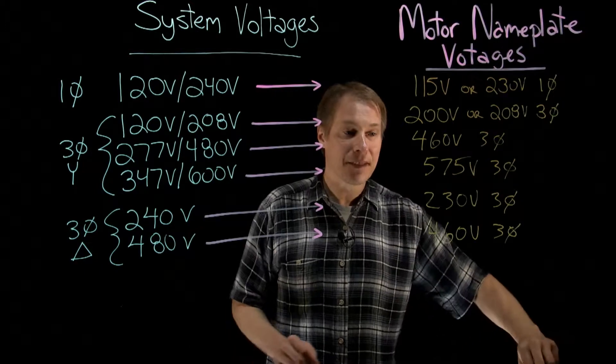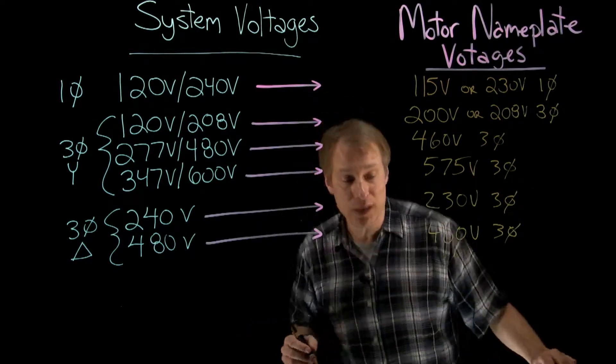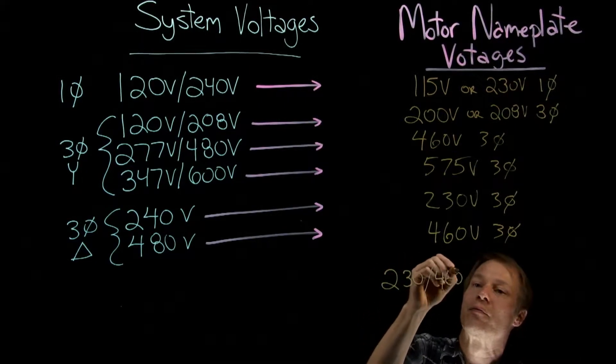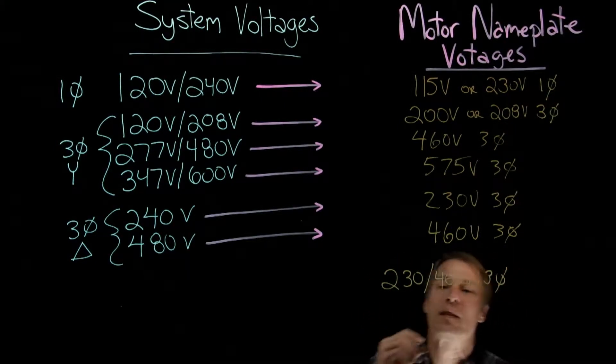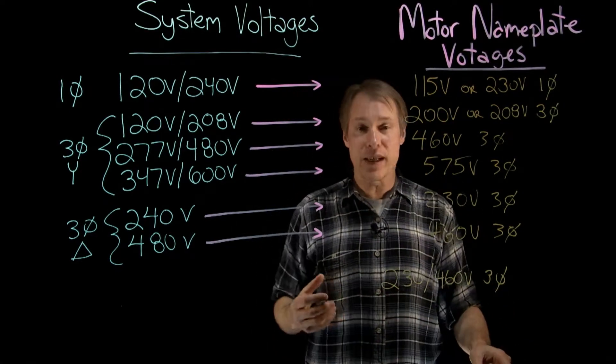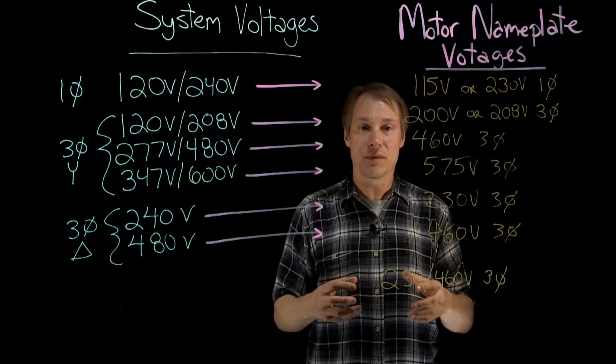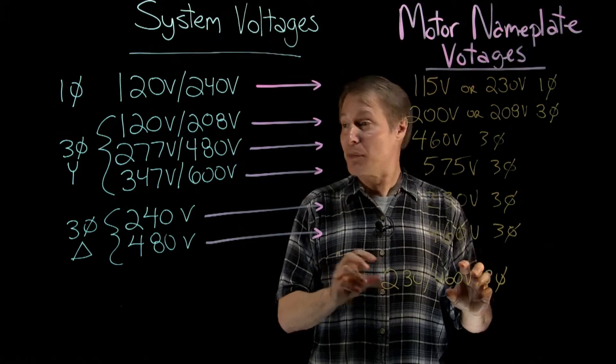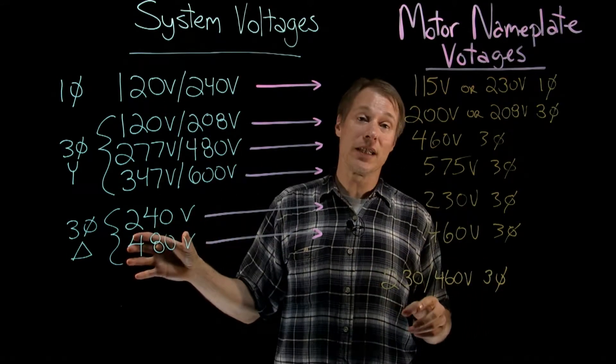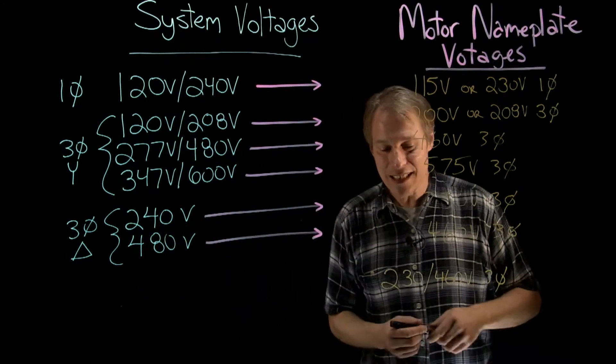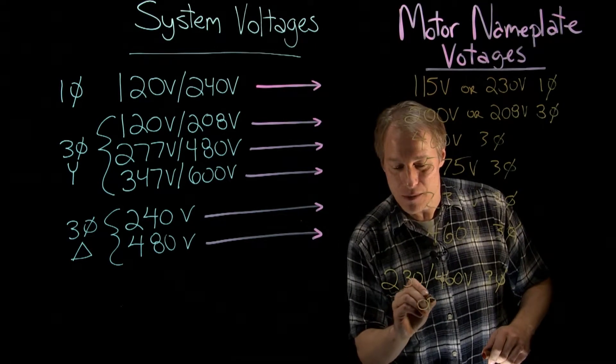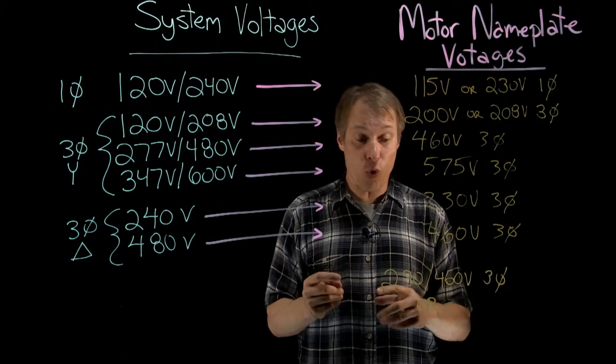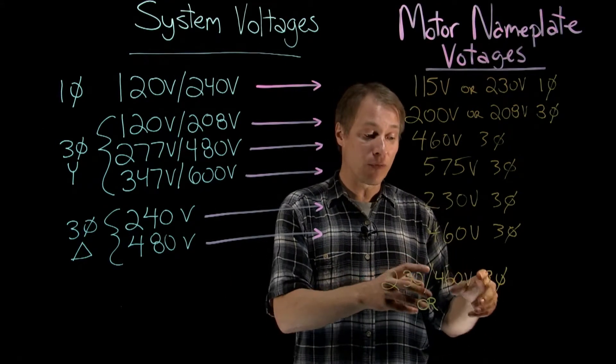The only other thing to add is some motors are dual voltage. So for example, I might buy a motor and on the nameplate it says 230V/460V three phase. So first of all, that is not a system. There is no 230V/460V system. What it is, it is a choice. So, you can either connect the motor to be rated for 230V or connect the motor to be rated for 460V.